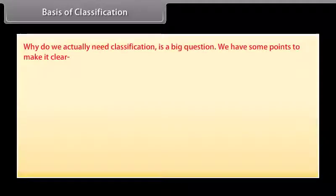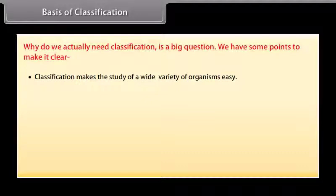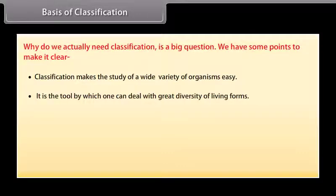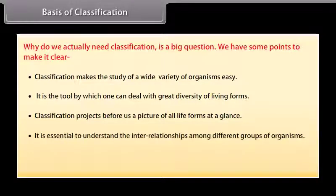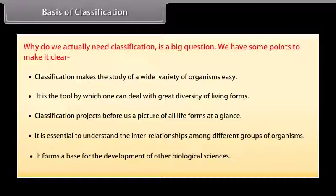Why do we actually need classification is a big question. Classification makes the study of a wide variety of organisms easy. Classification is the tool by which one can deal with great diversity of living forms. Classification projects before us a picture of all life forms at a glance. Classification is essential to understand the interrelationships among different groups of organisms. Classification forms a base for the development of other biological sciences.